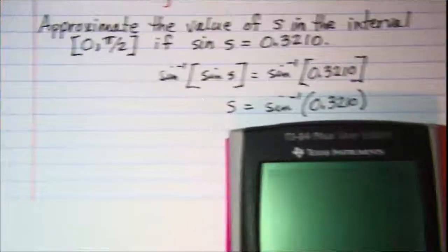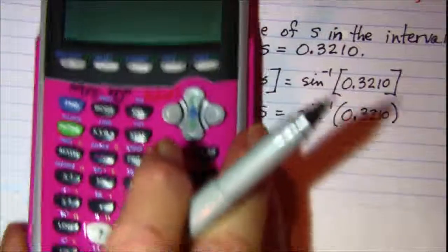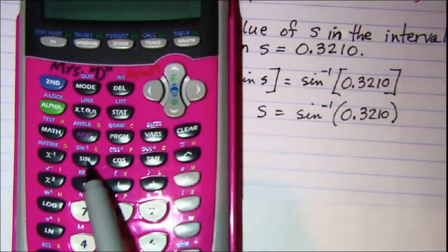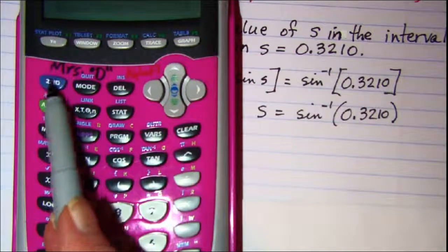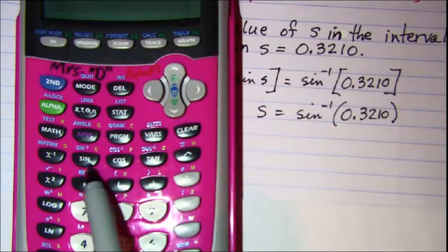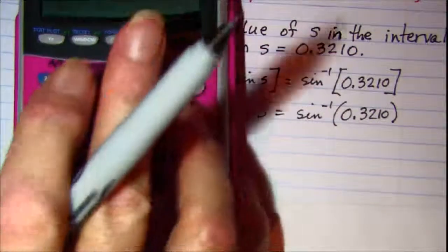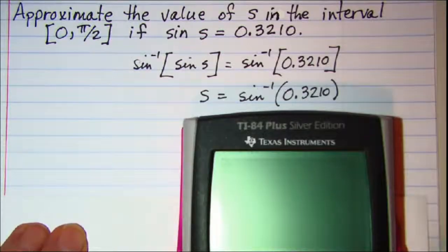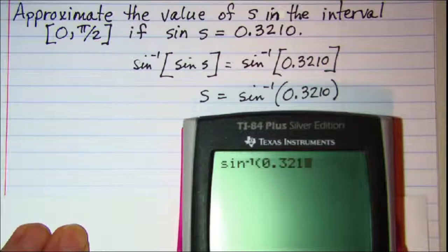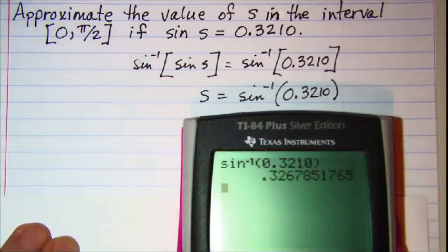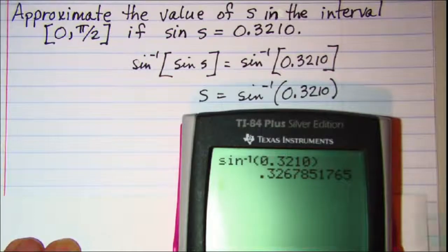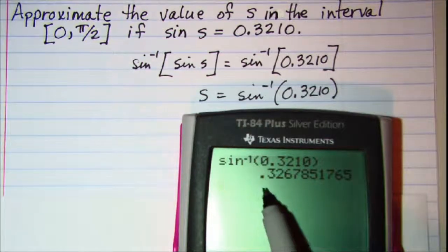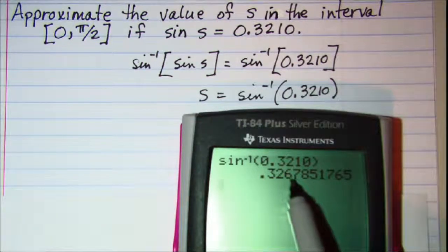On our calculators the inverse sine button — on this one it's right above the sine key — so we have to press second and then sine. You'll need to look at your calculator and see what button you'll need to push. So the inverse sine of 0.3210 gives us the angle 0.3268.